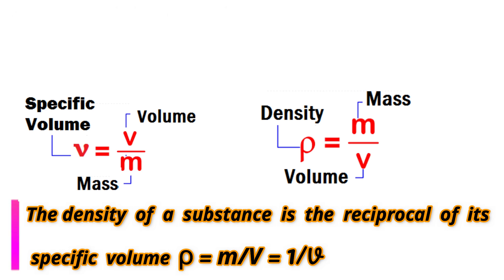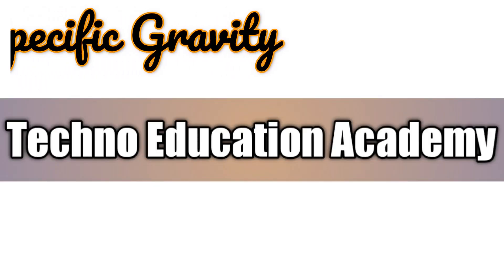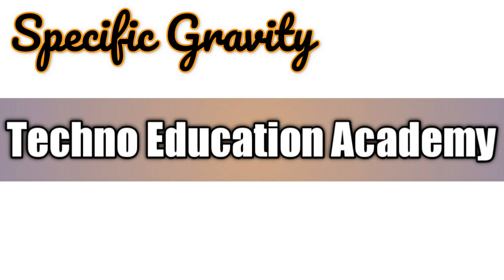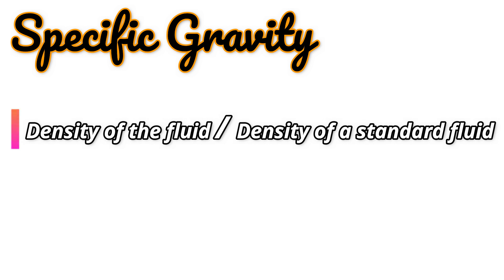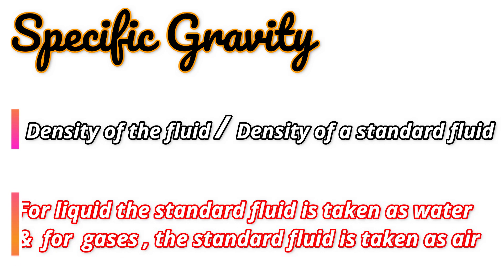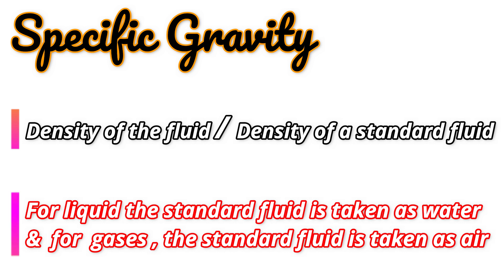The next property is specific gravity. Specific gravity is the ratio of the density of the fluid to the density of a standard fluid. For liquids, the standard fluid is considered as water, and for gases the standard fluid is considered as air.